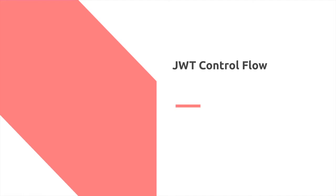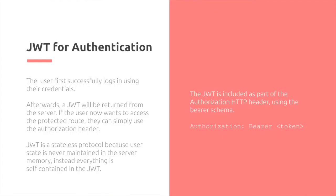The control flow for authentication using JSON Web Tokens: the user first successfully logs in using their credentials. Afterwards, a JSON Web Token is returned from the server. If the user wants to access a protected route, they use the authorization header. This is a stateless protocol because the user state is never maintained on the server — everything is self-contained in the JWT. As part of the HTTP header, you set: Authorization: Bearer, followed by the token.